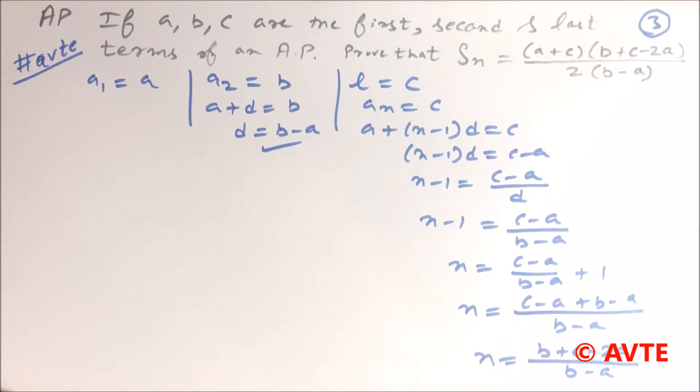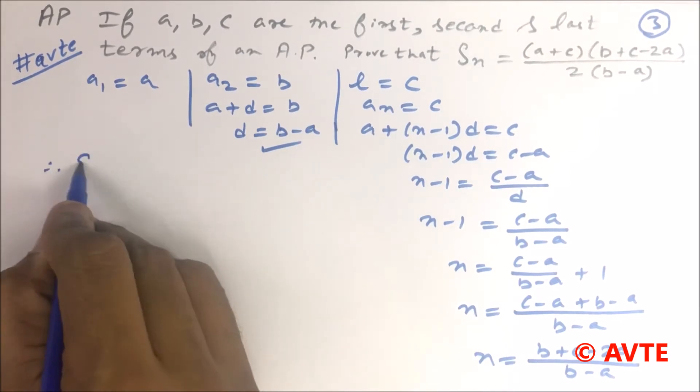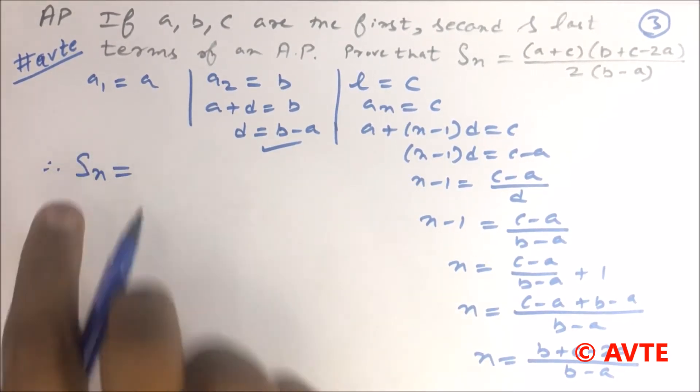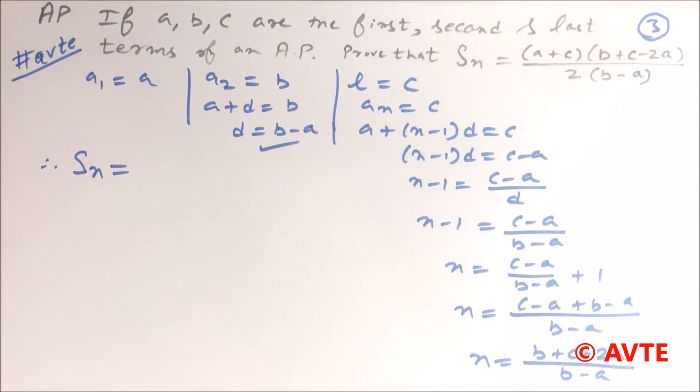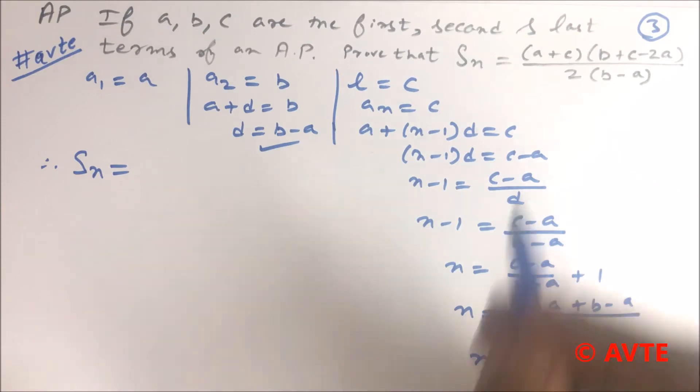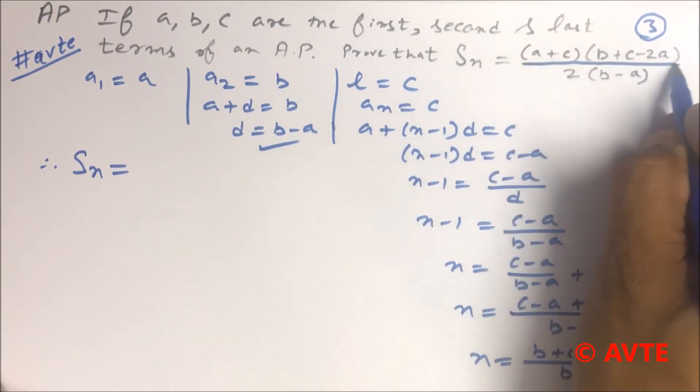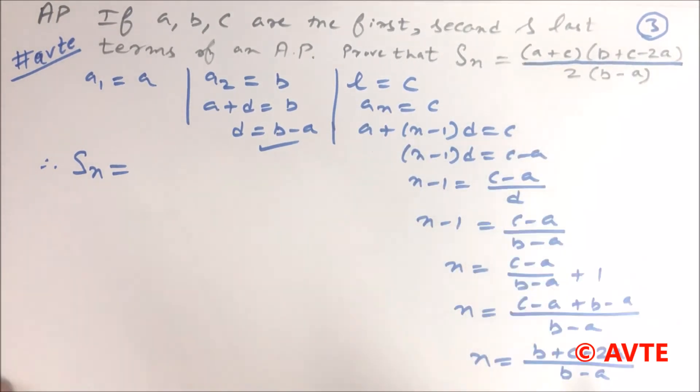Now we have to prove that the sum of first N terms is (A plus C) times (B plus C minus 2A) upon (2B minus A).